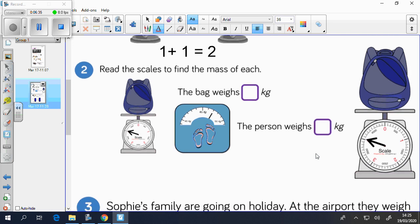Question 2. Read the scales to find the mass of each. The bag weighs something kg. Again, because it is a little bit blurry, I've got a larger image here for you. And again, the person weighs something kg. So you do have to be careful there because there are numbers that are missing out. So if you start with 40 and then find the difference between 40 and 45 here, that should help you to find the weight of the person. Pause the video now to have a go.